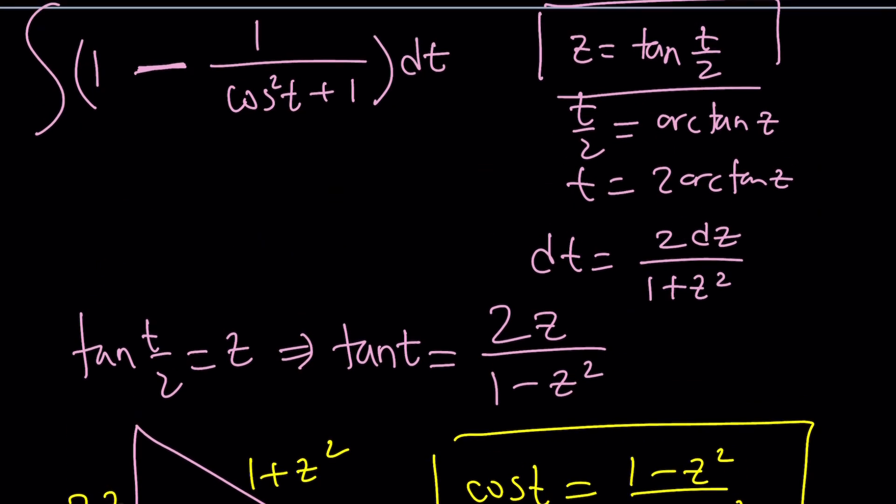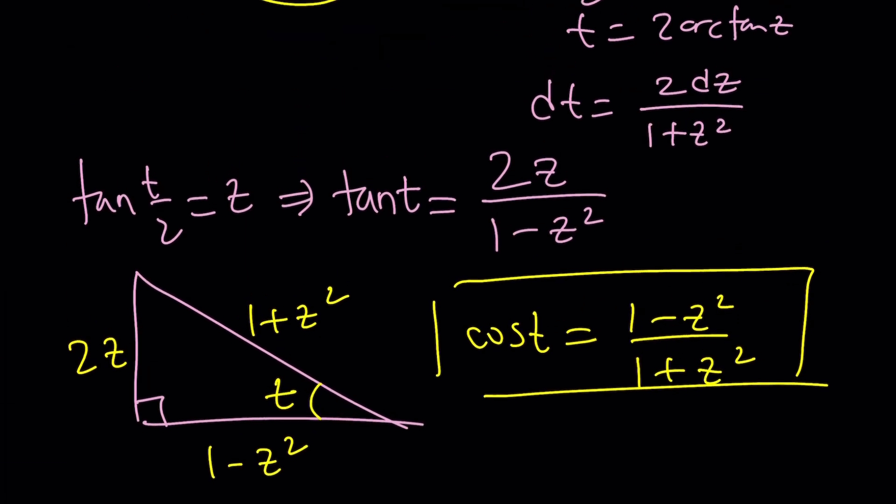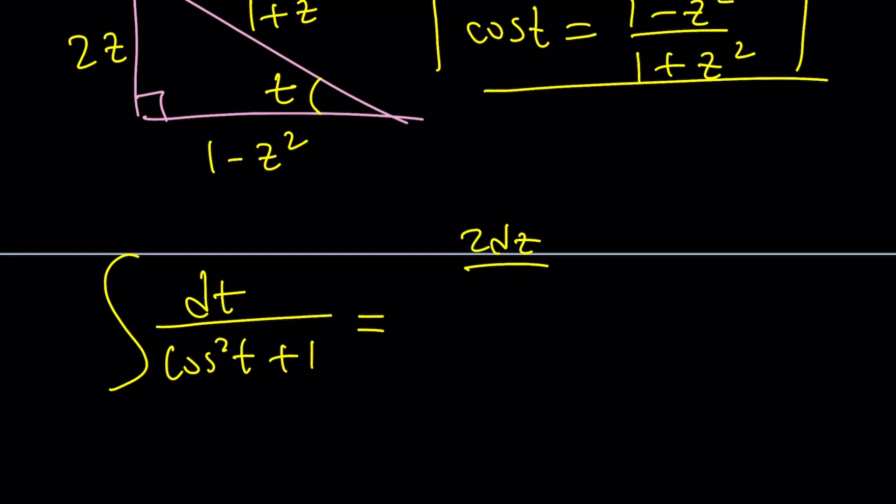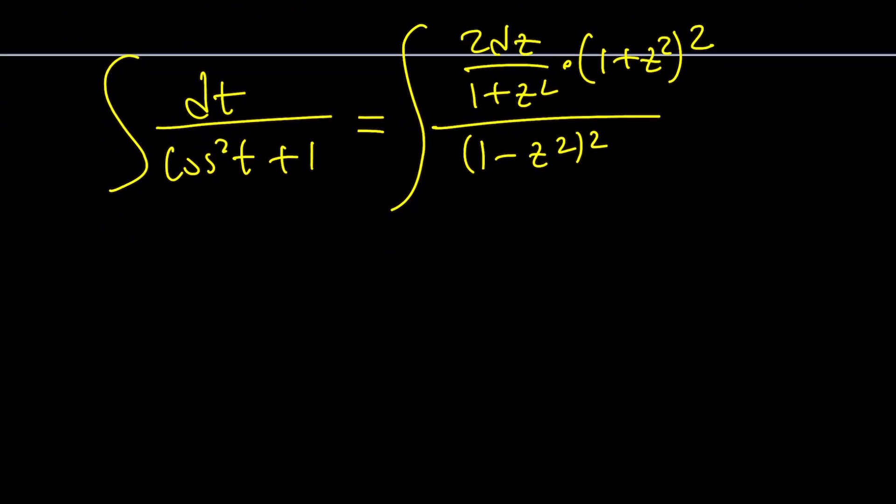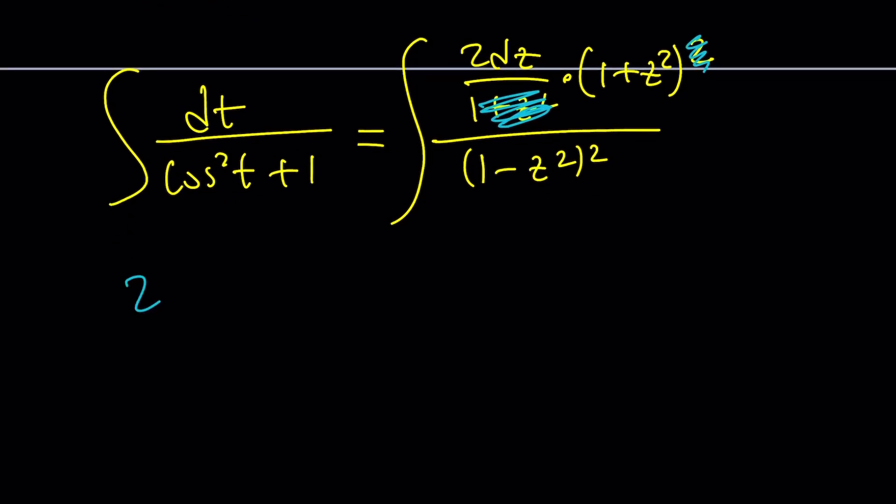So I think we're ready to do the substitution. I don't even know if this is going to give us something nice, but we can focus on that integral and then put the pieces together. Let's plug in everything. What is dt? 2dz/(1 + z²). And then cos²t is going to be that thing squared. We have a cancellation.